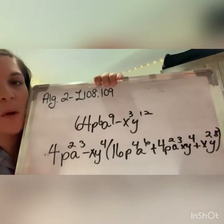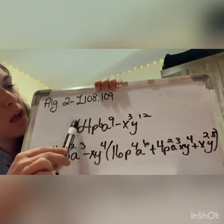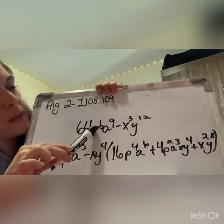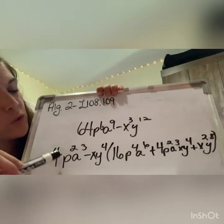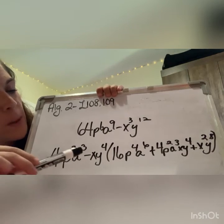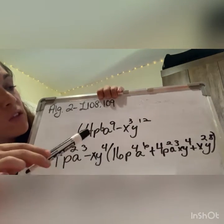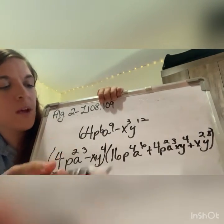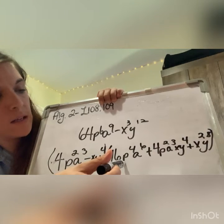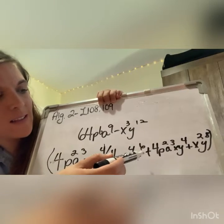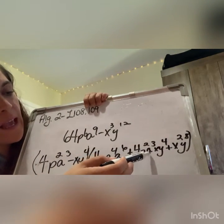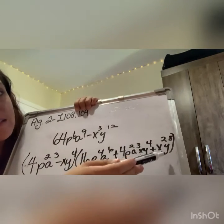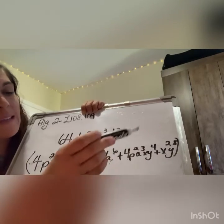On this practice, remember what to do when you're multiplying and dividing exponents. The cube root of 4, p to the sixth is p squared, a to the ninth is a to the third, minus x to the third divided by three is x, and y to the twelfth divided by three is y to the fourth. So that's your a minus b. Then a squared: 4 squared is 2, p squared is p to the fourth, a to the third squared is a to the sixth, plus ab is 4p squared a to the third xy to the fourth, plus b squared which is x squared y to the eighth. That is Lesson 108.